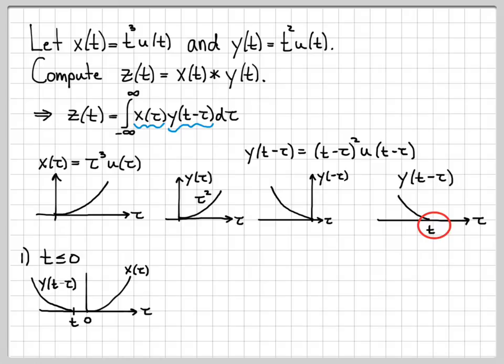And I can tell that these signals, they don't overlap at all. x of tau times y of t minus tau is equal to 0, because x of tau is 0 all down here. And similarly, y of t minus tau is 0 all up here. So when I multiply them together, that product is actually 0,